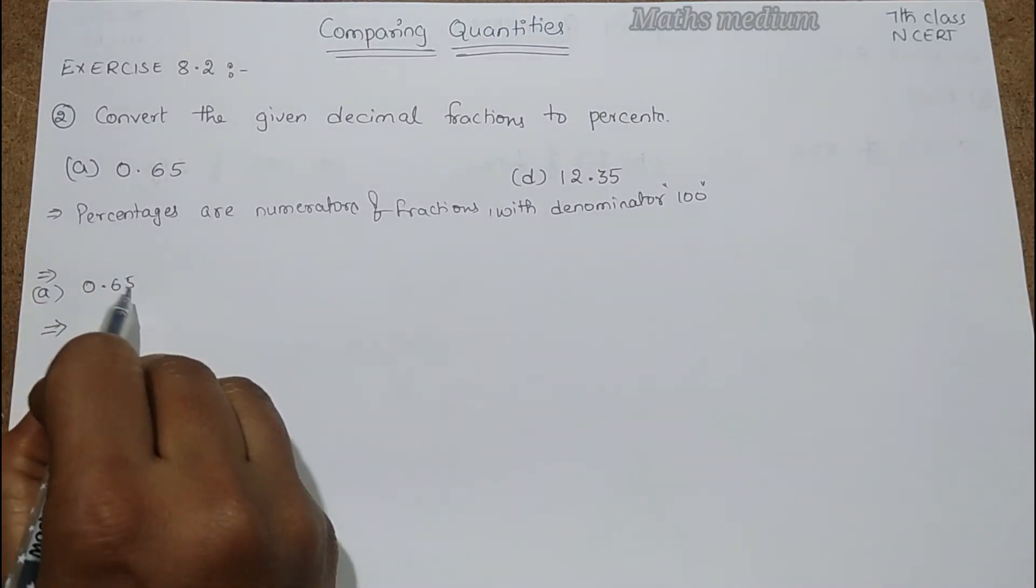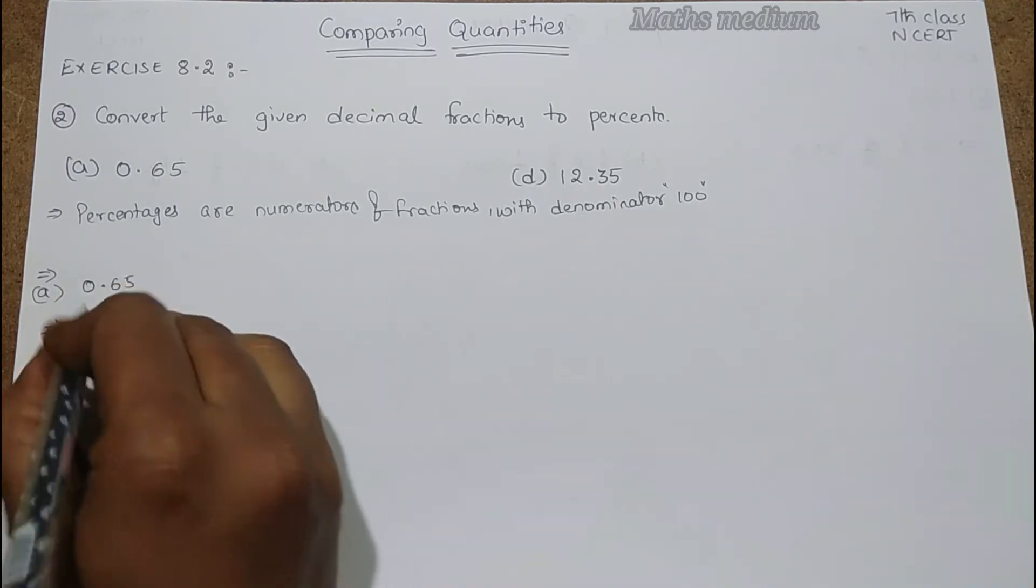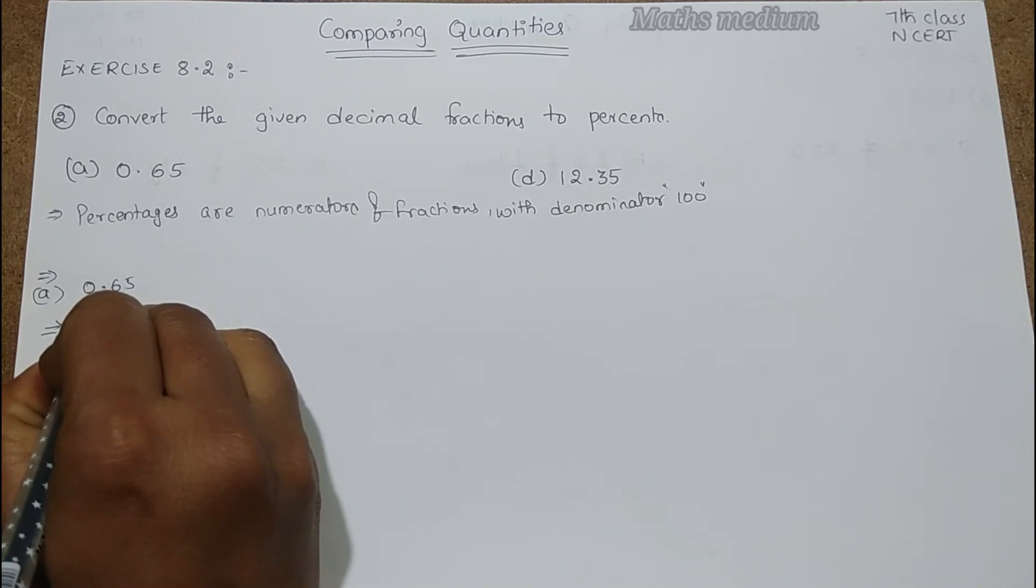So here 1, 2. After two points from right to left. So we have to divide this number by 100. So we have to take 65 divided by 100.